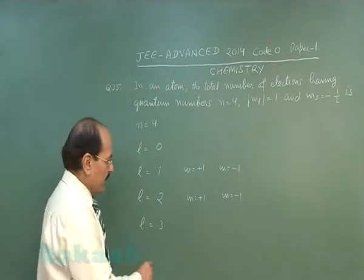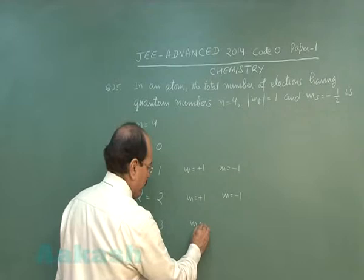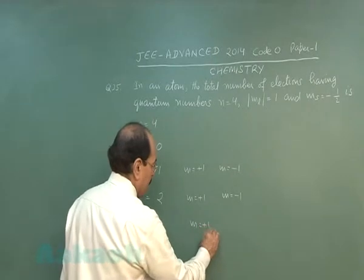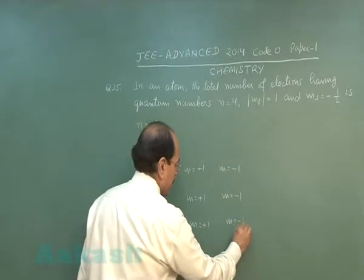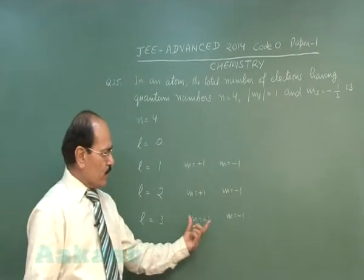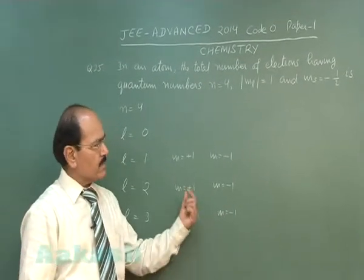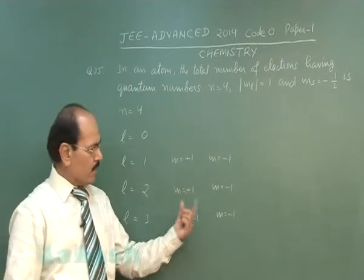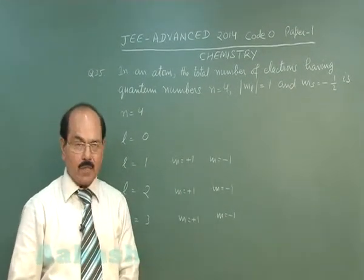Similarly, for l equal to 3, again there are 2 orbitals. Each orbital can have 1 electron with spin quantum number minus half.